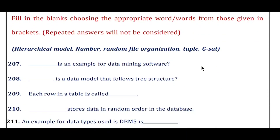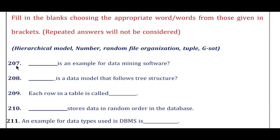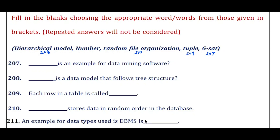Question 207: Dash is an example of data mining software — the answer is GSAT. Question 208: Dash is a data model that follows a tree structure — the answer is hierarchical model. Question 209: Each row in a table is called — the answer is tuple. Question 210: Dash stores data in random order in the database — the answer is random file organization. Question 211: An example of a data type used in DBMS is — the answer is number.